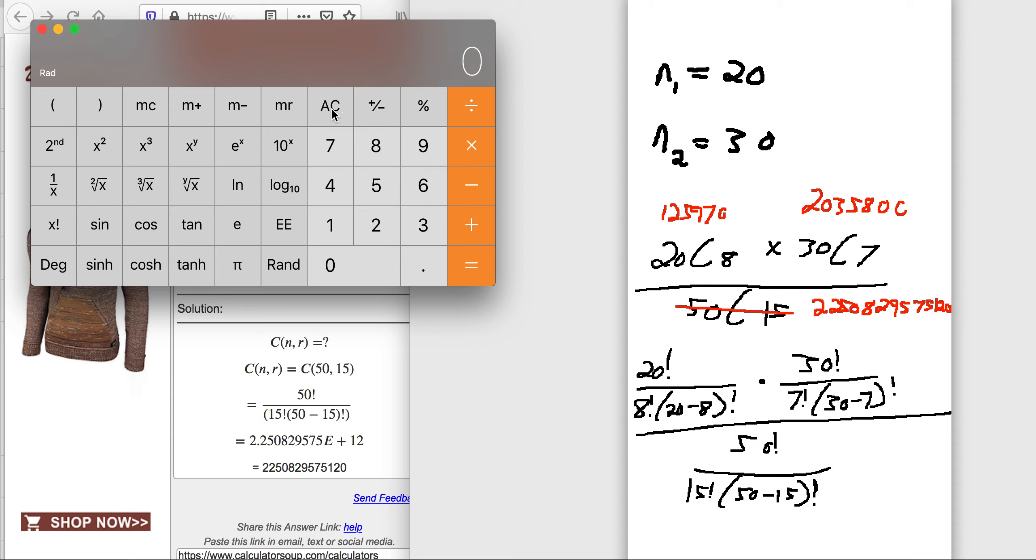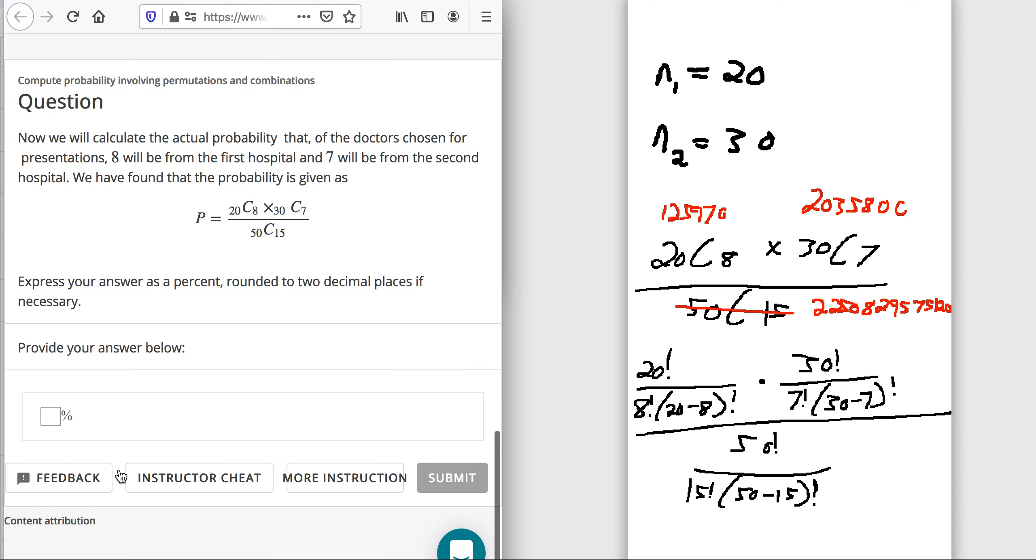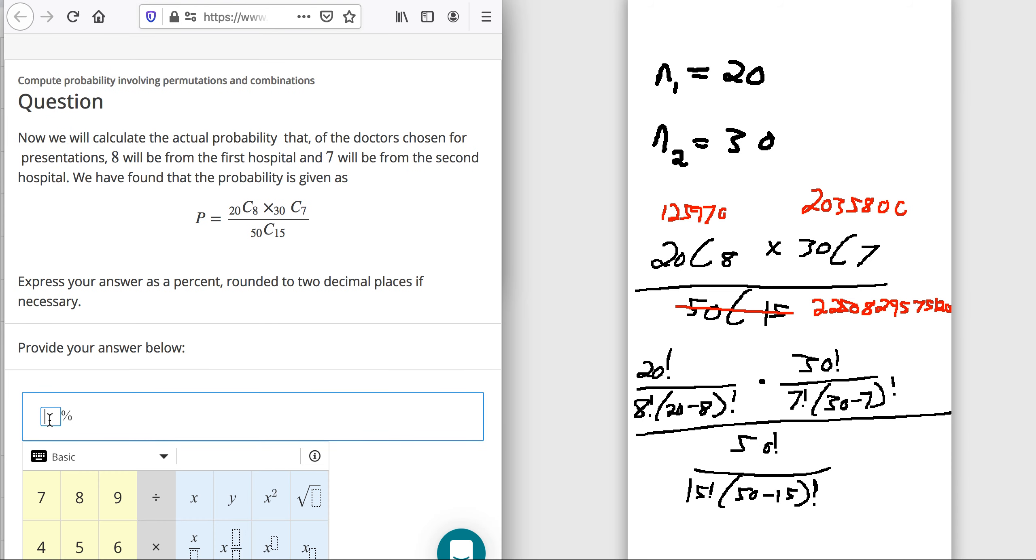So now we can multiply the top. 125970 times 2035800. That's what the top is. And divide that by the bottom. 2250829575120. Wish they could have given a smaller number. So, we got 0.1139. And then as a percentage, we just have to move the decimal place two places to the right. Round to two decimal places. So, this is 11.39% rounded.